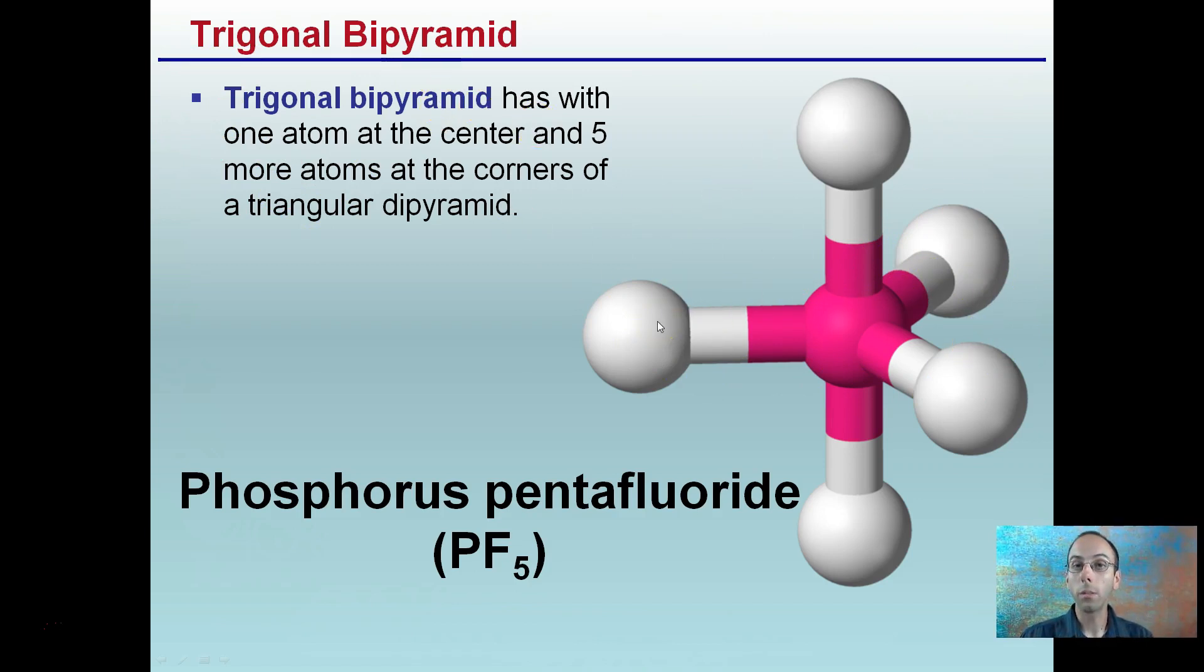It'll be pyramid one, and then this forms a pyramid. That can be pyramid two. So these are two pyramids, and here's our trigonal planar area here. So the proper term for this molecule, phosphorus pentafluoride, trigonal bipyramid.